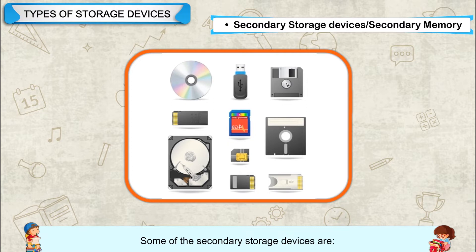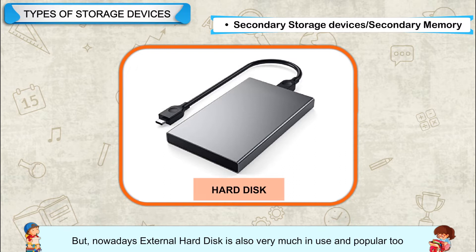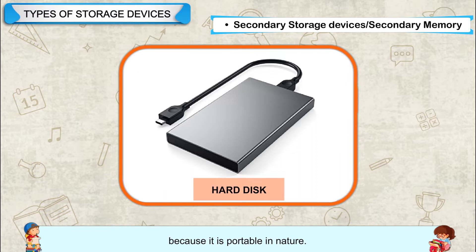Some of the secondary storage devices include the Hard Disk. All the work done on a computer system is stored on a hard disk. It can store a large amount of data. The hard disk is present inside the CPU box, but nowadays external hard disks are also very popular because they are portable. It can store anything from 160GB to 2TB.